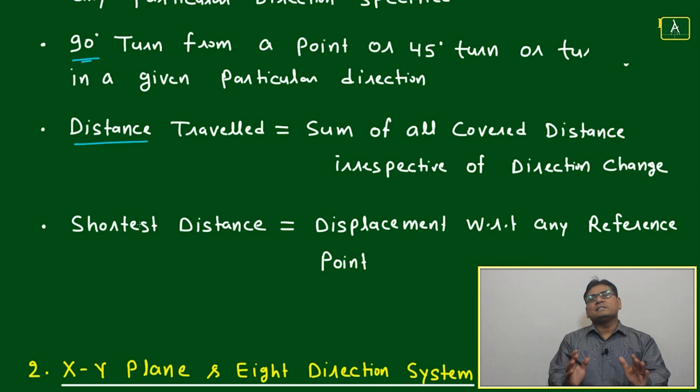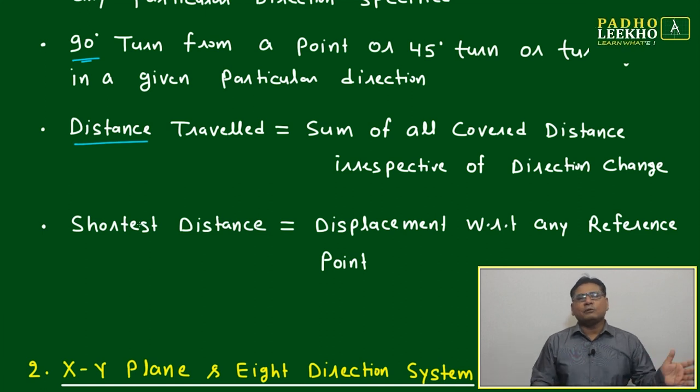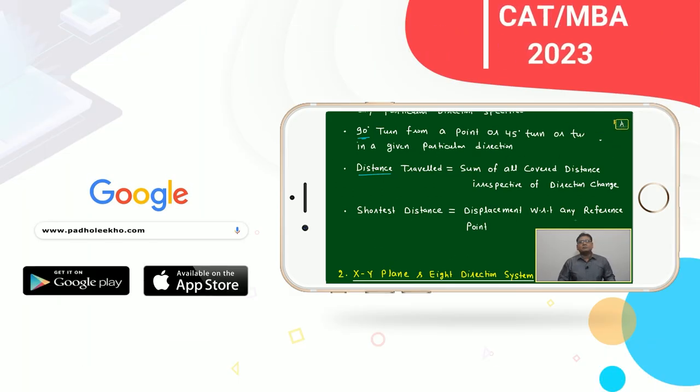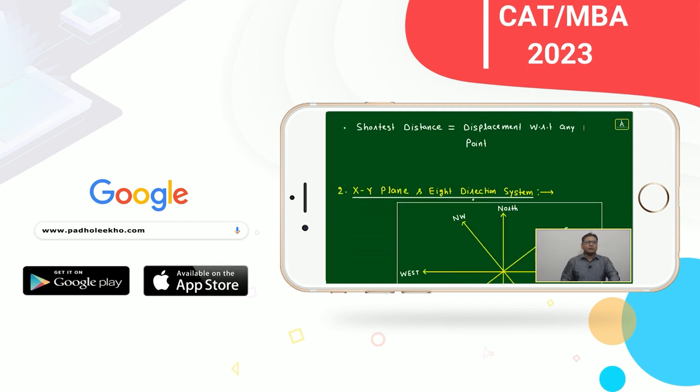Shortest distance is displacement with respect to any reference point, meaning the shortest aerial distance that we can see.